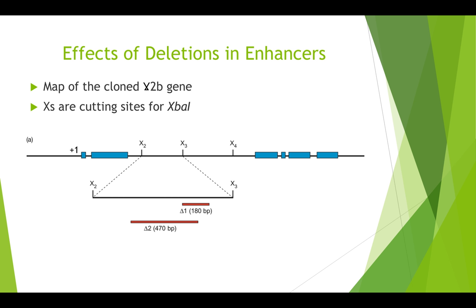The investigators began by deleting two regions of DNA from the suspected enhancer region. The first deletion is about 180 base pairs, referred to as delta 1. The second is an overlapping deletion that is bigger, about 470 base pairs, referred to as delta 2. They then assayed the expression of the gamma2b gene in cells transfected with these mutated DNAs, testing the hypothesis that if the enhancer was in this region, expression should be impaired.